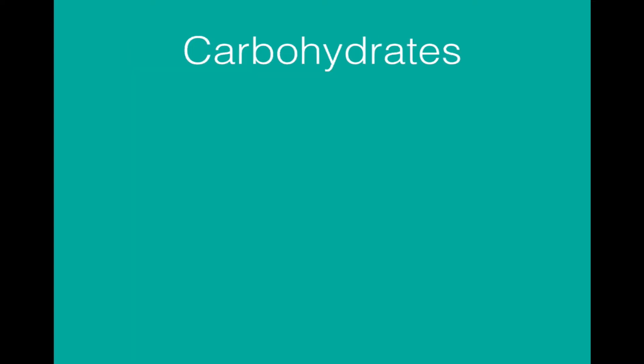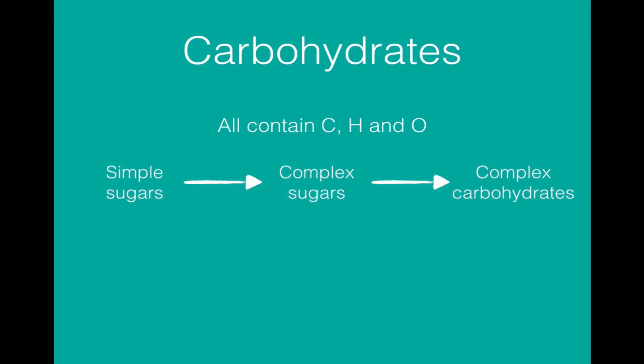The first group we are going to look at are the carbohydrates. All contain carbon, hydrogen and oxygen. And there are three layers of complexity in carbohydrates. You have simple sugars, which include glucose, fructose and galactose.